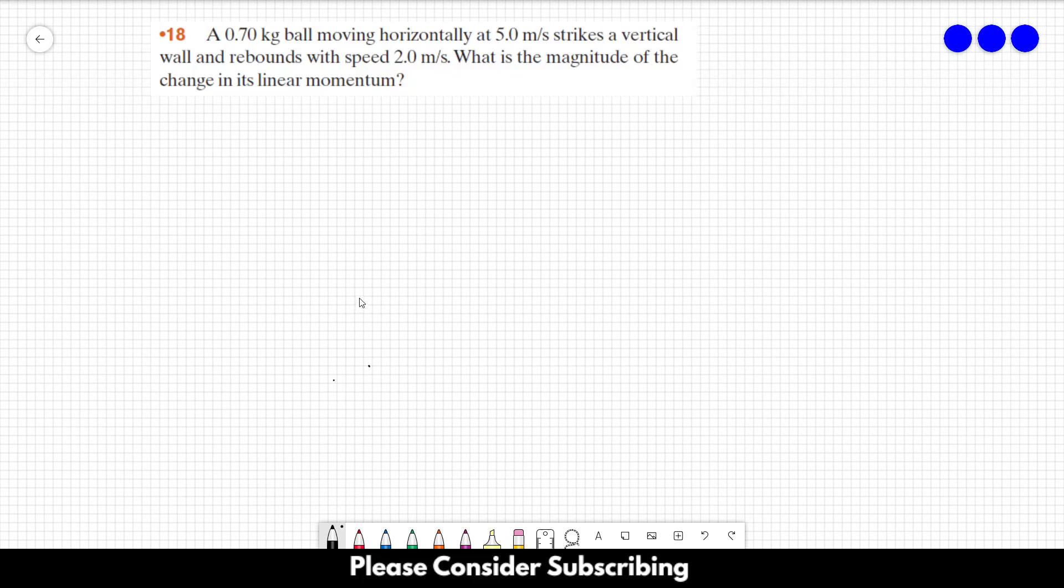Number 18: A 0.7 kilogram ball moving horizontally at 5 meters per second strikes a vertical wall and rebounds with speed 2 meters per second. What is the magnitude of the change in its linear momentum? Momentum equals mass times velocity, and change in momentum equals mass times delta V.